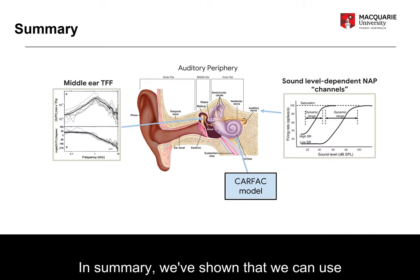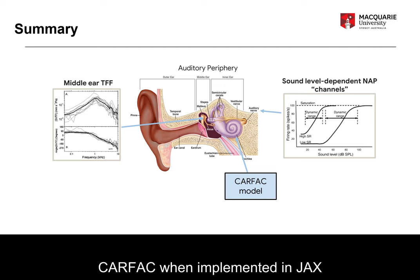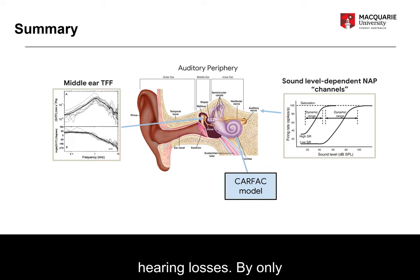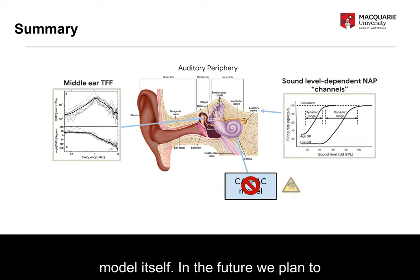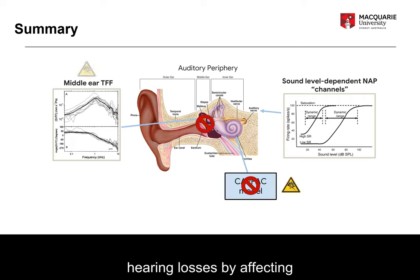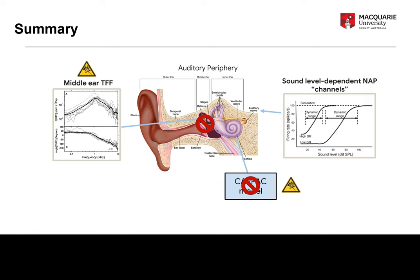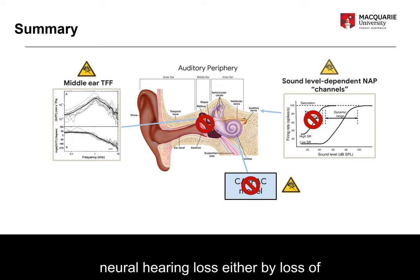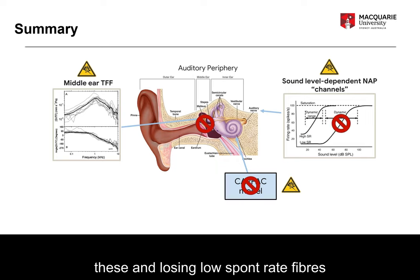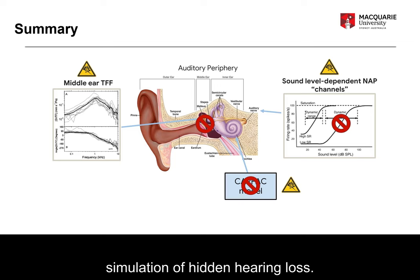In summary, we've shown that we can use CARFAC implemented in JAX to simulate individual hearing losses by only impacting the gain within the CARFAC model itself. In the future, we plan to look at combining this with conductive hearing losses by affecting the middle ear transfer function, as well as potentially sensorineural hearing loss, either by loss of high-spontaneous rate fibers or by retaining these and losing low-spontaneous rate fibers, which could potentially lead to simulation of hidden hearing loss.